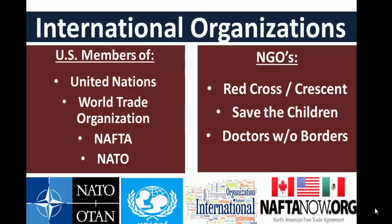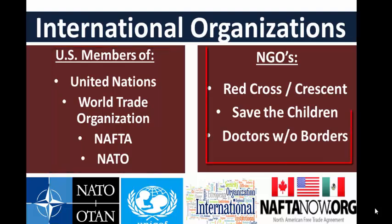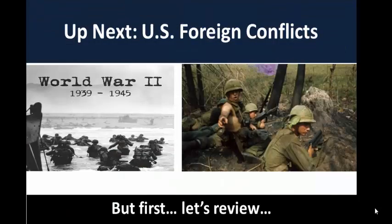For your exam, keep in mind the international organizations the US is either a member of — like the UN, the WTO, NAFTA, and NATO — or those they are impacted by and participate in, such as NGOs like the Red Cross and Doctors Without Borders. That's our brief look at international organizations. Up next is US foreign conflicts, basically a review of US foreign wars.